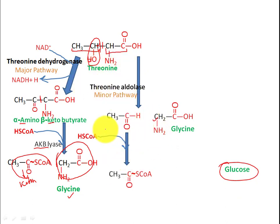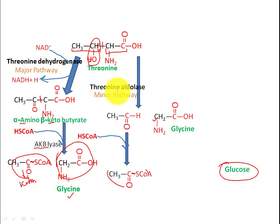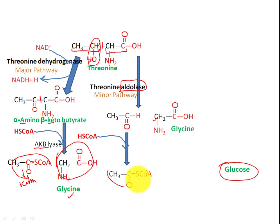Pathway two also produces glycine and acetyl-CoA — the same products as pathway one. Here, the very first step is a cleavage: threonine aldolase (a lyase) directly breaks threonine into glycine and acetaldehyde. The acetaldehyde is then converted into acetyl-CoA. So both pathways yield glycine and acetyl-CoA.